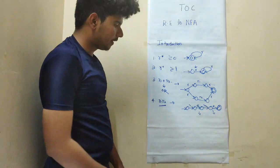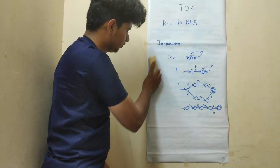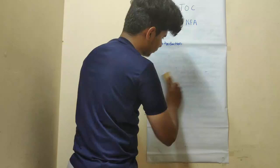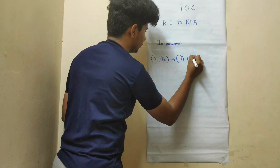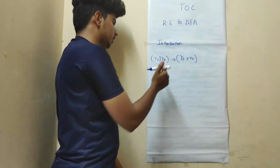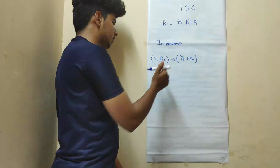We have covered basic REs and their equivalent finite automata representations. One more is there — you can denote R1 slash R2 as equivalent to R1 plus R2; both are the same. You can denote in either way, you can construct like this also, like this also. We will go with this representation here afterwards.